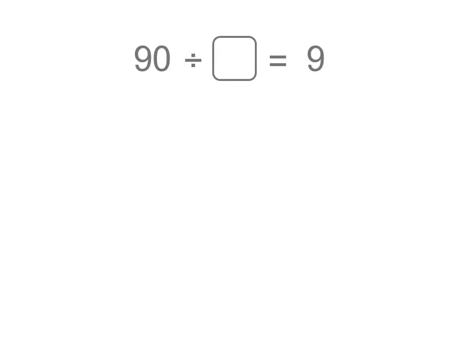Now we've got some division. 90 divided by what number equals 9? How do we make that statement true?